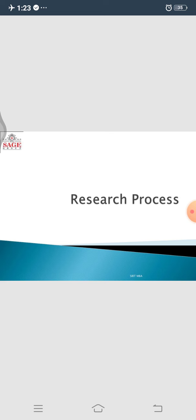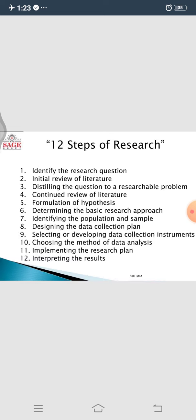In the research process, the first point is that we need to identify the research question. That is the foremost point the researcher has to follow. First, the researcher identifies an area in which he has to work upon.